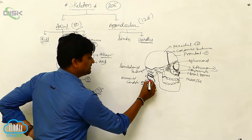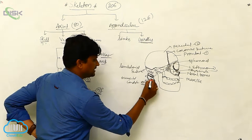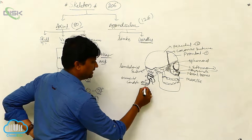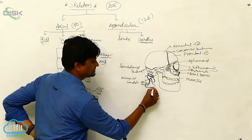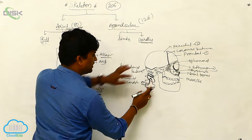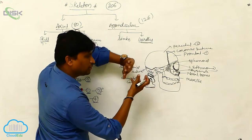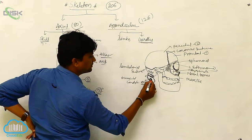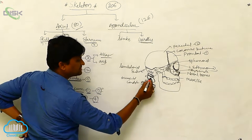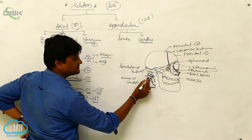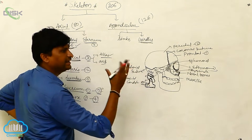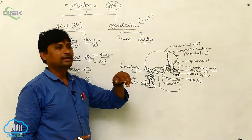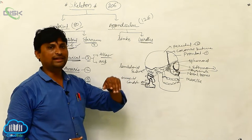The atlas has an odontoid process, also called the dens. In the axis region, the atlas can be articulated and moved in any direction. This allows movement like nodding yes and no — all these movements are performed by this joint between the atlas and the axis.